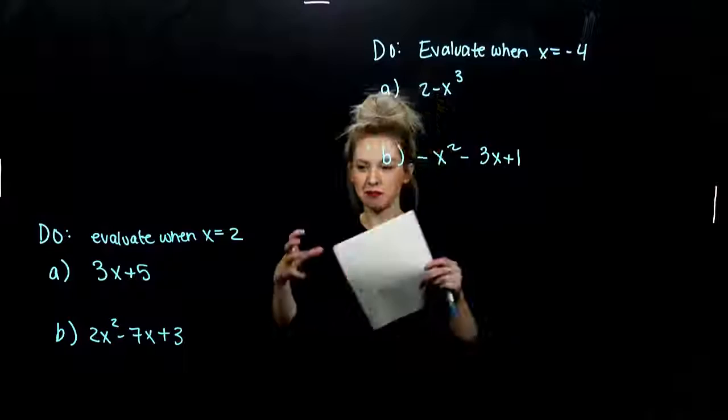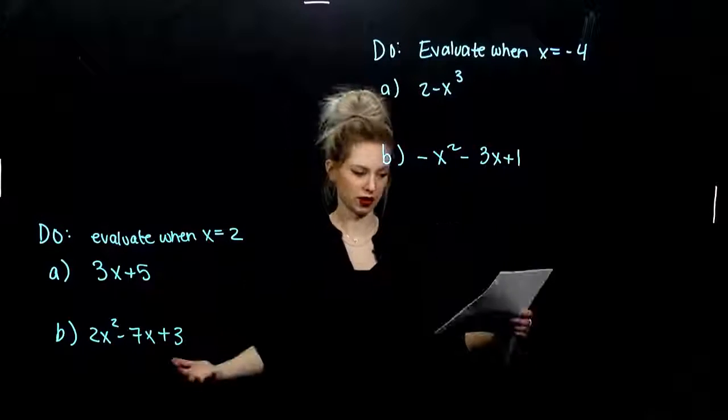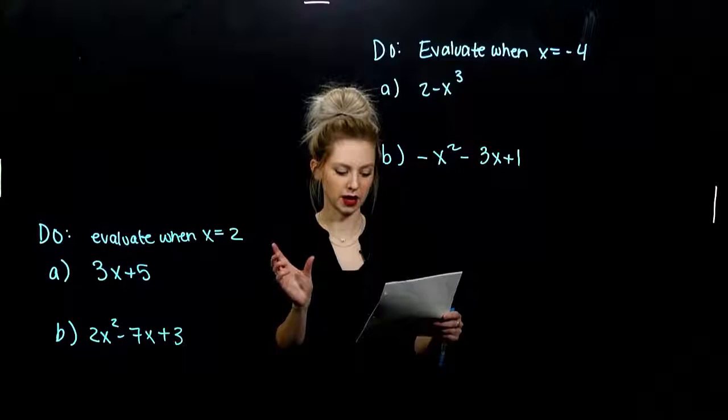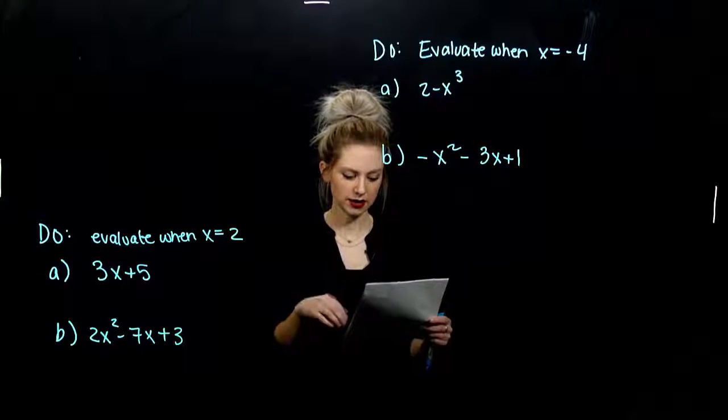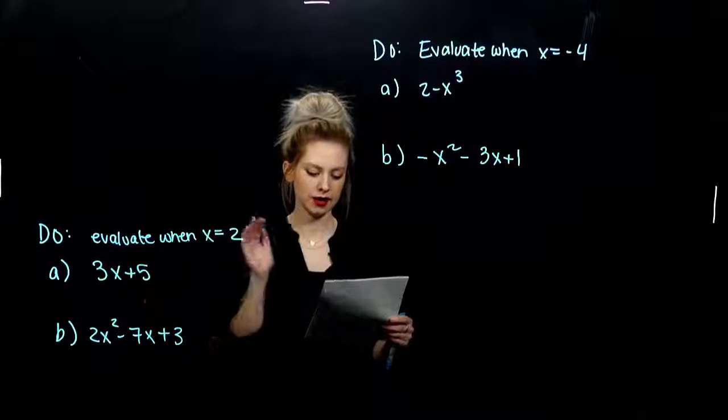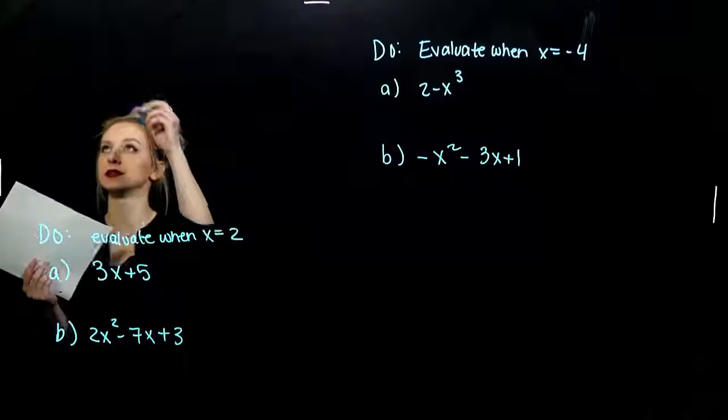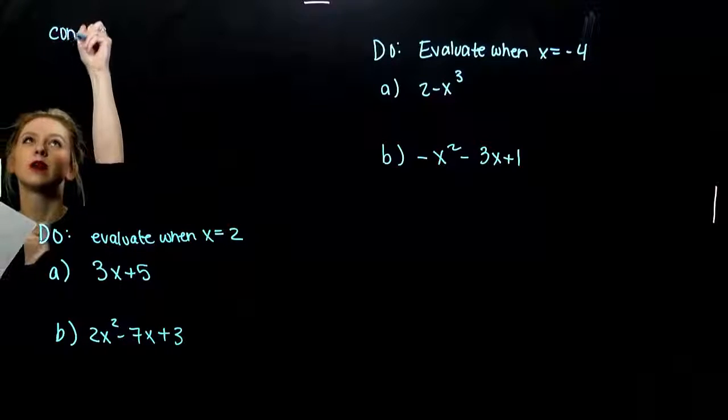We're going to look at the most basic case and then build from there. A monomial, the smallest polynomial that we can have, the smallest number of terms, is an expression of that type: ax to the nth, where a is a real number constant, so just something floating out on the front.